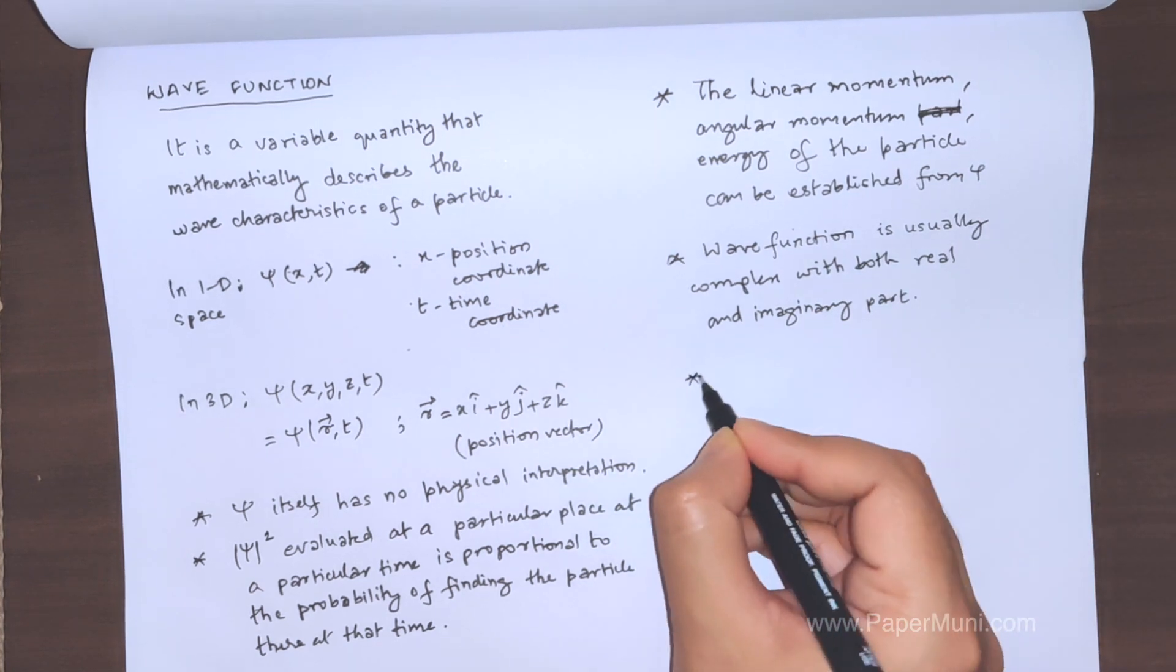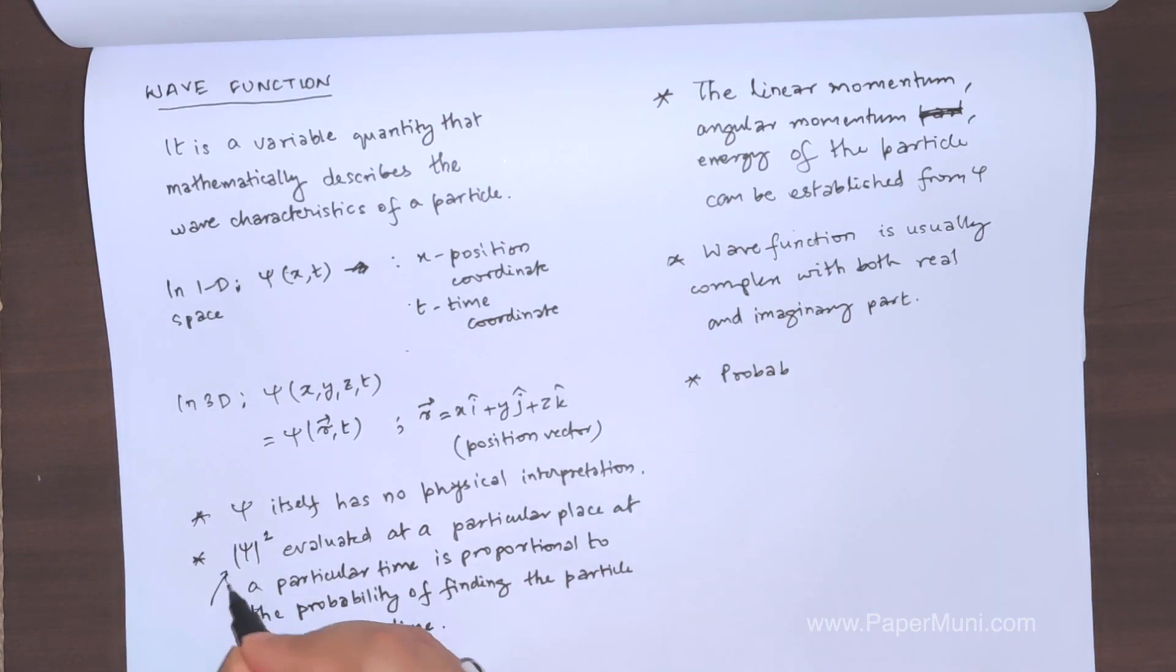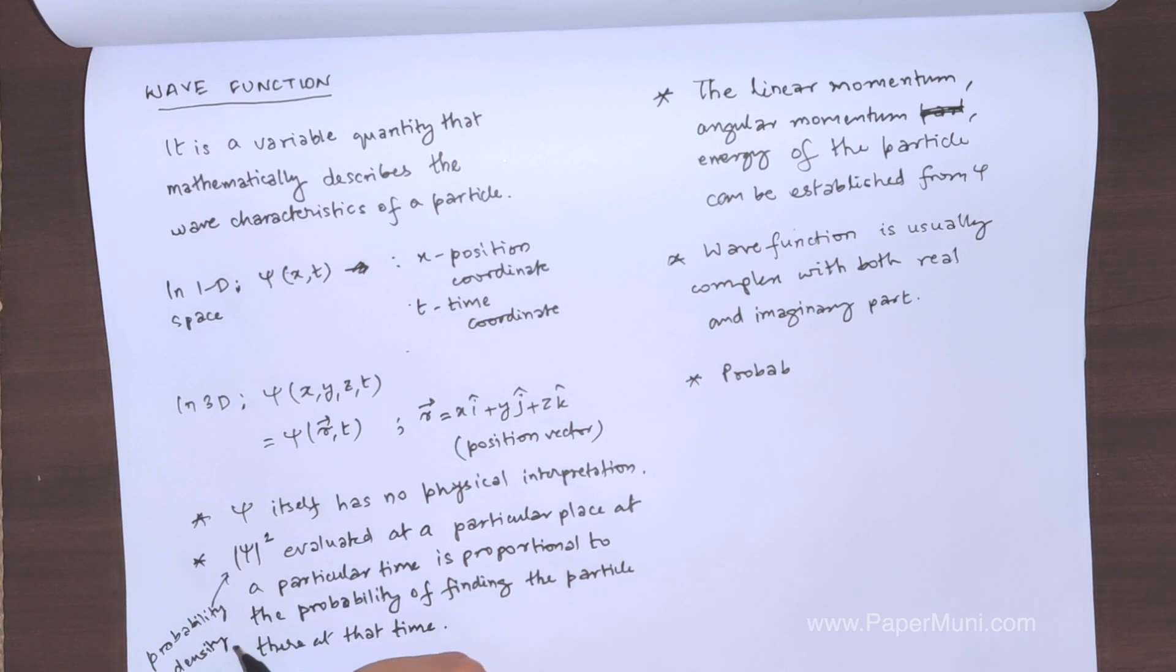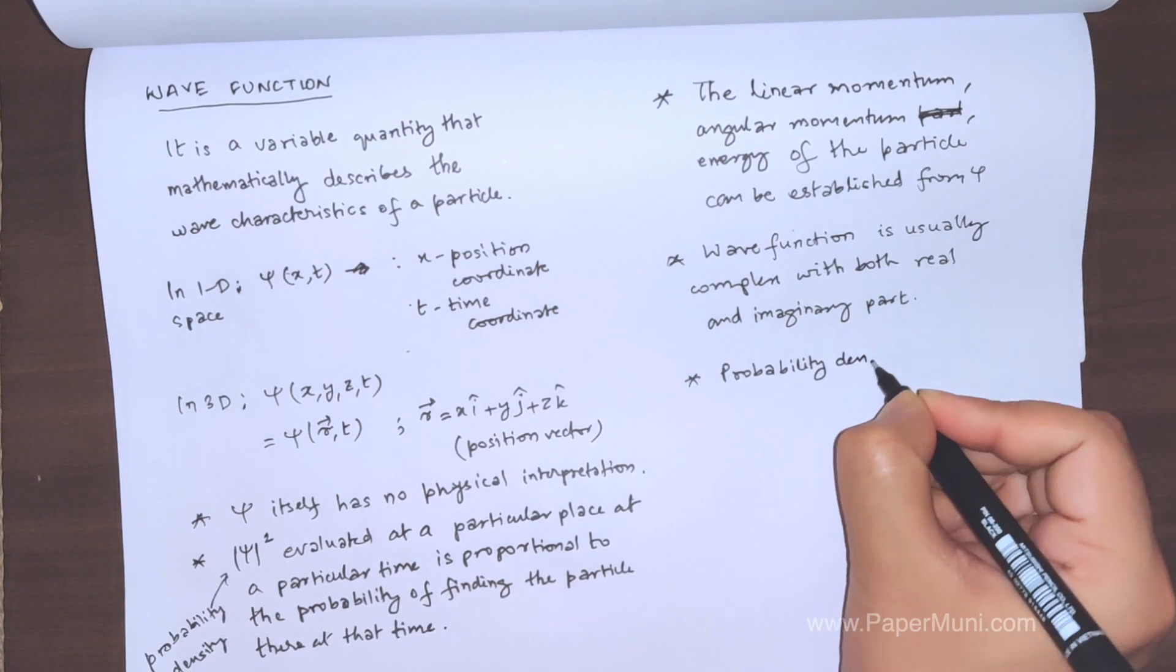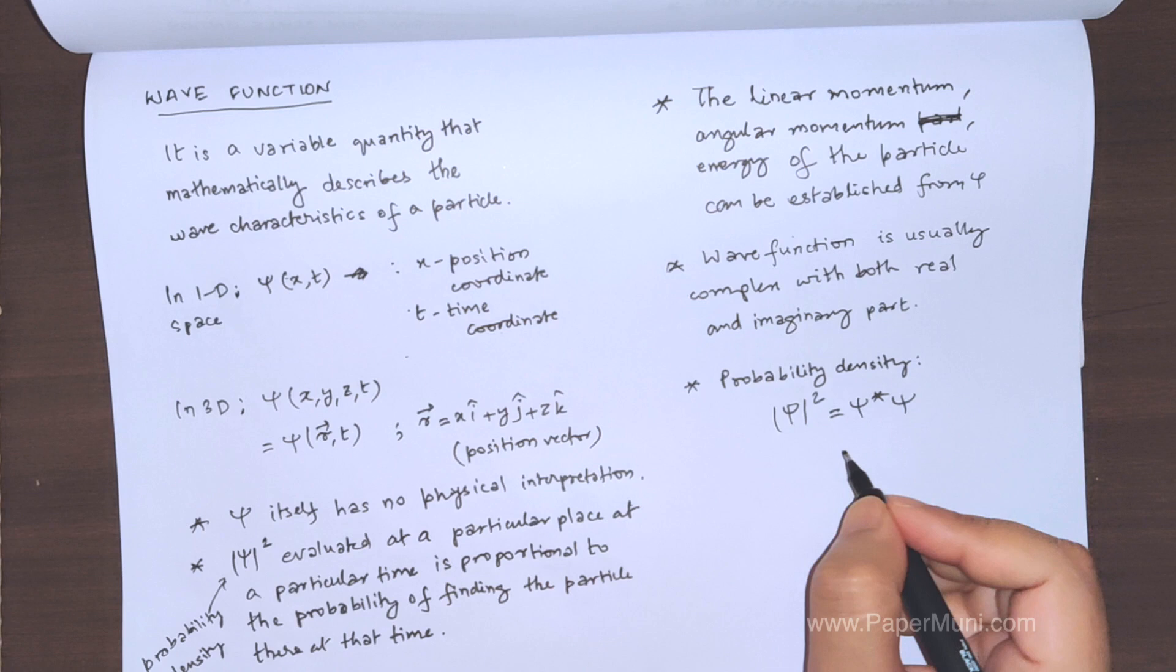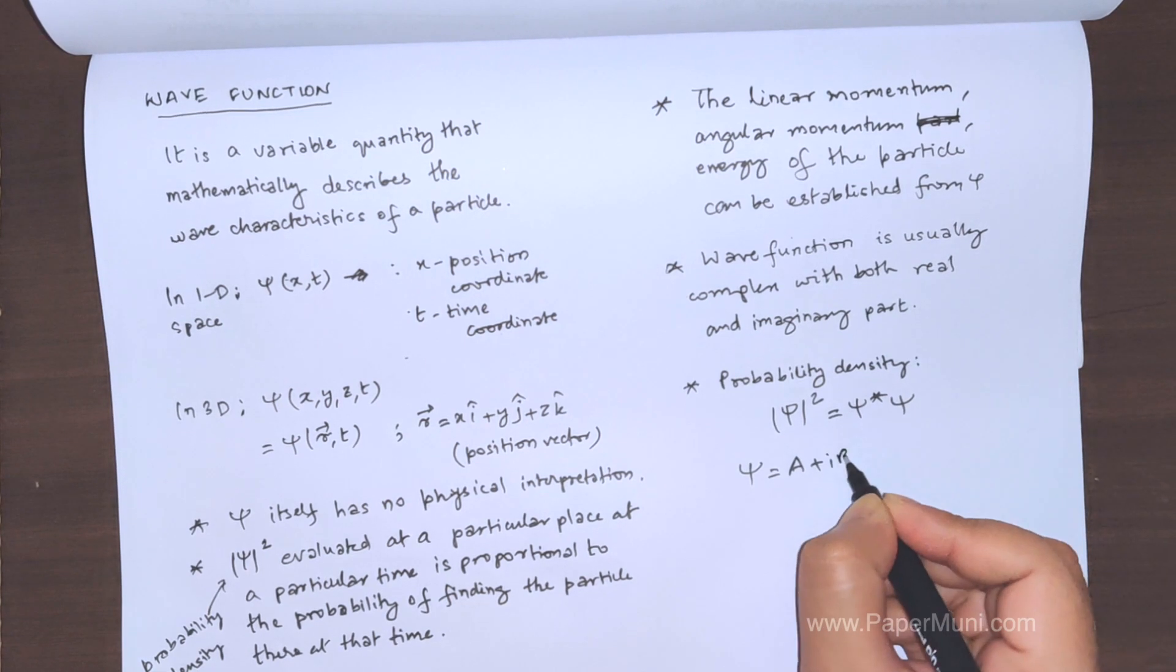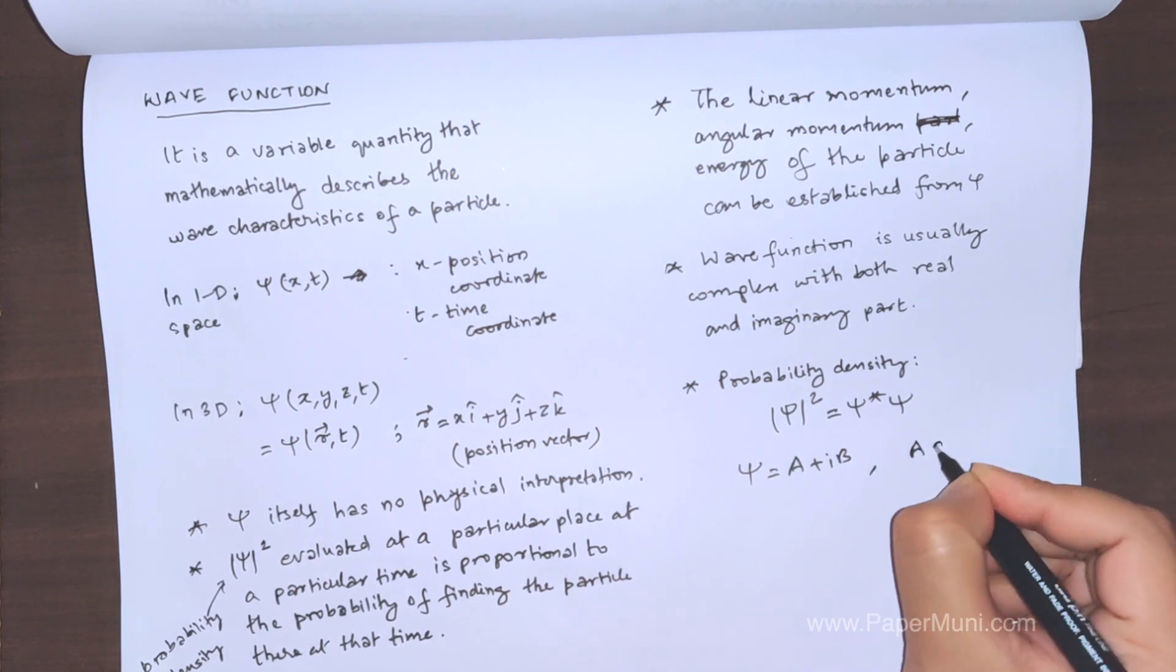Now the probability density is calculated like this. This quantity is the probability density. Probability density is given by psi mod square, which is psi star psi. Now this psi, as we said, it can have a complex form, so it would be like this: a plus ib, where a and b are some real functions.